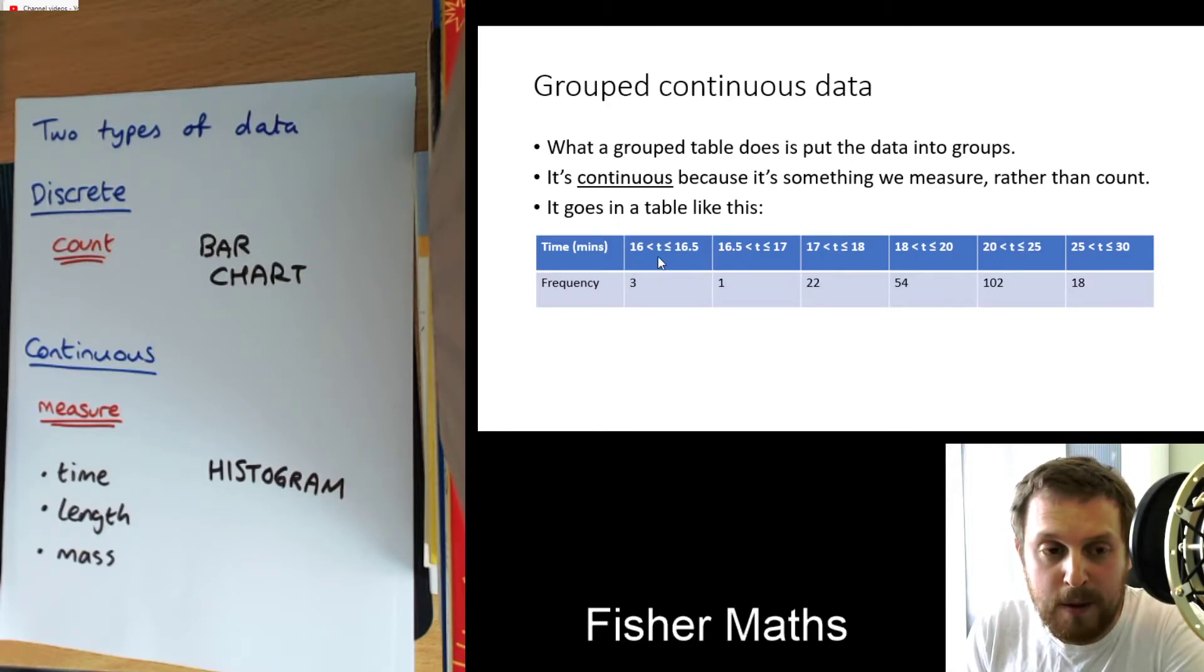So let me just explain what this group here is actually representing. And then I'll talk about the symbols. So this is the group of people who got between 16 and 16 and a half minutes. Now remember, that's actually 16 minutes and 30 seconds. This group is the group of people who got between 16 and a half and 17 minutes. This is the group of people who got between 17 and 18 minutes, 18 to 20, 20 to 25, and 25 to 30.